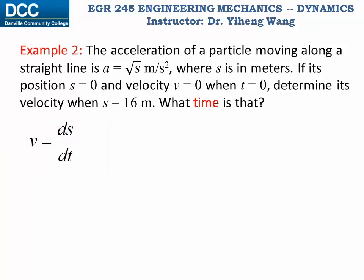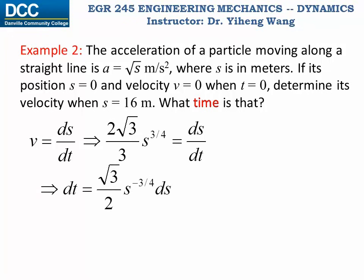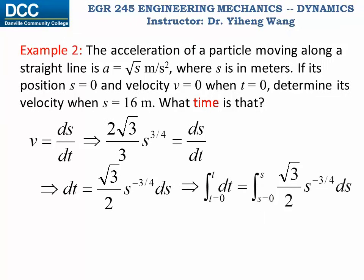So we start with this equation, substitute velocity with the position function we got from the previous part, and we want to move the term dt to the left side and move the term with s to the right side. And integrate both sides.